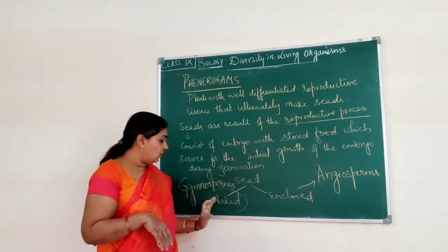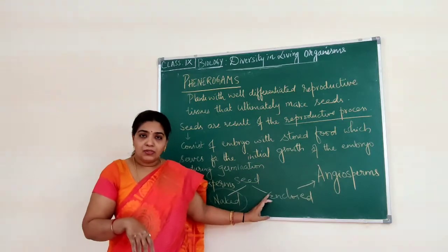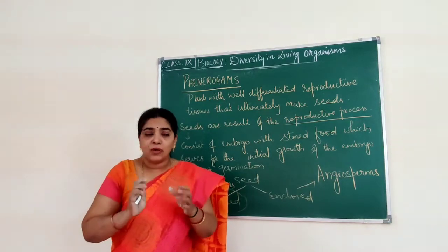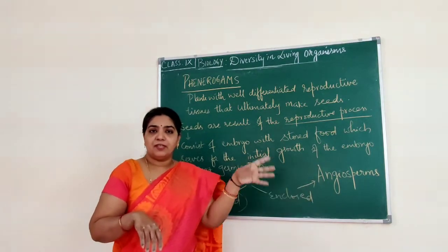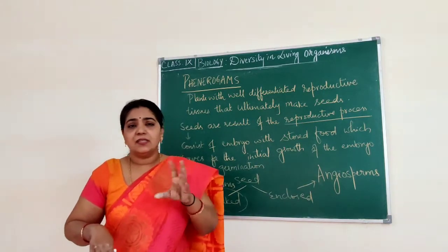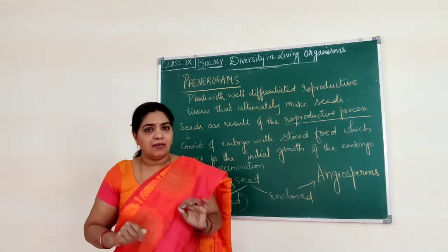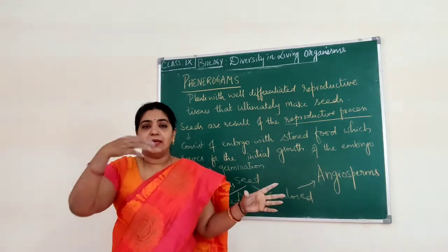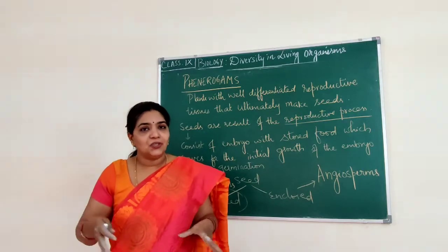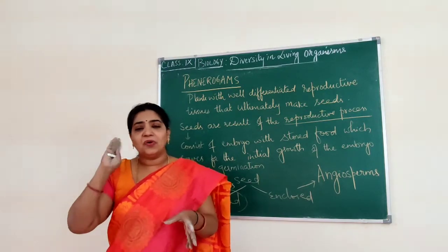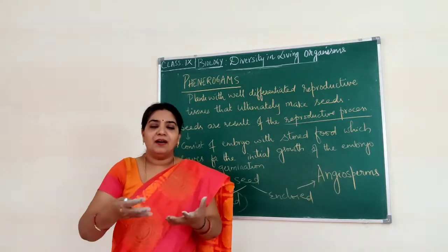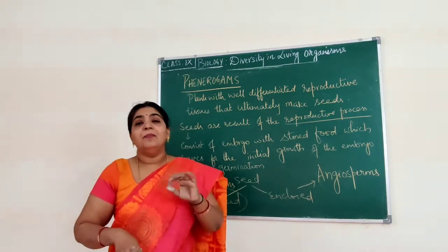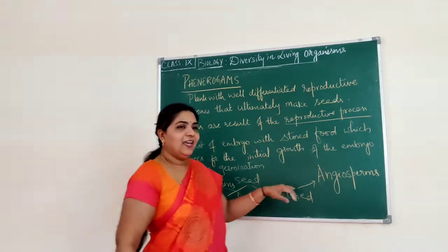Seeds can be classified into two types: naked seeds and enclosed seeds. If the seed is present inside a capsule or a fruit, they are called angiosperms. Examples include mango, papaya, tomatoes, banana, brinjal, and lady's finger — they are all angiosperms because the seed is enclosed by a structure called a fruit.